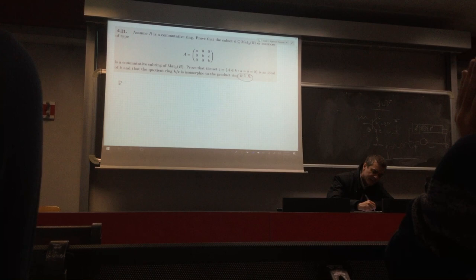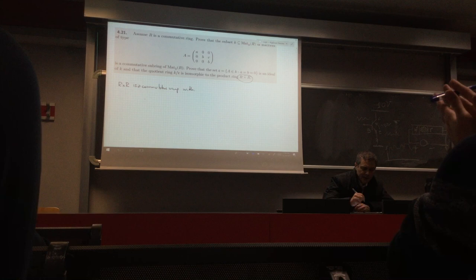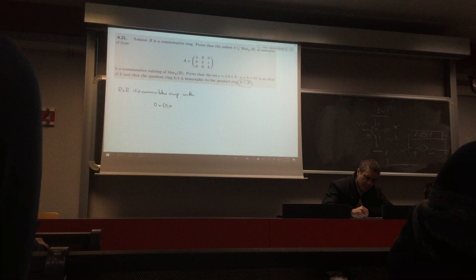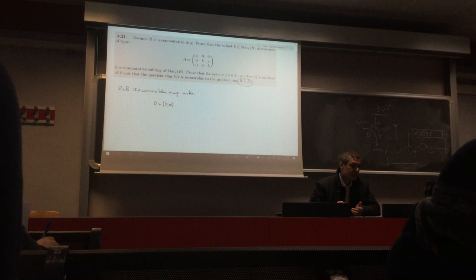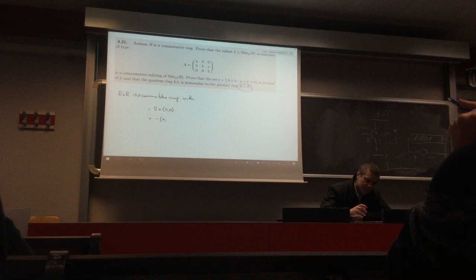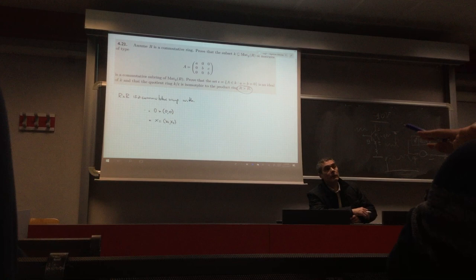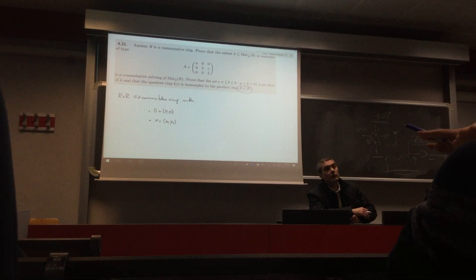Actually let's first handle the product ring. Suppose R is a commutative ring. We look at R times R, which is a commutative ring with component-wise operations. The zero is the pair (0, 0), and if x has coordinates (x₁, x₂), the operations are defined coordinate-wise.